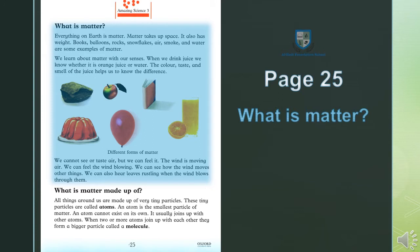For example, when we drink juice, jab hum juice peetay hain, we know — hum jantay hain — whether it is orange juice or water. Toh hume yeh pata hota hai ke yeh orange juice hai ya phir yeh pani hai. Kyun? The color, uska rung; taste, uska zaiqa; and the smell, or uski khushbu kiski juice ki, helps us — madad karta hai — to know the difference, hume unka fark dekhne mein.